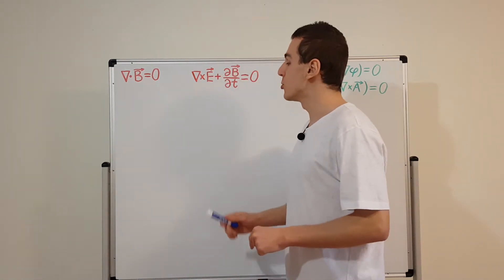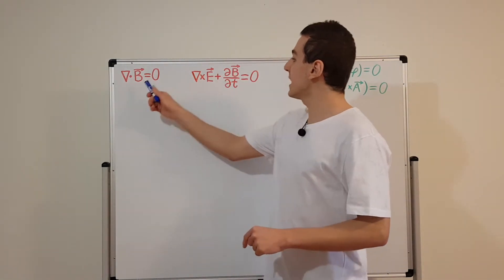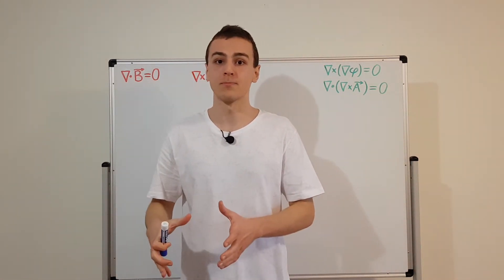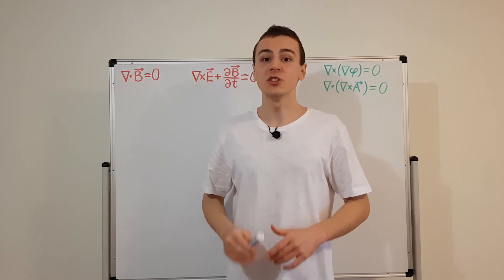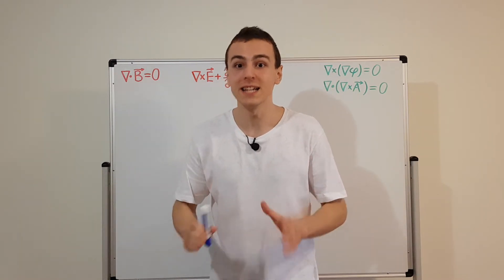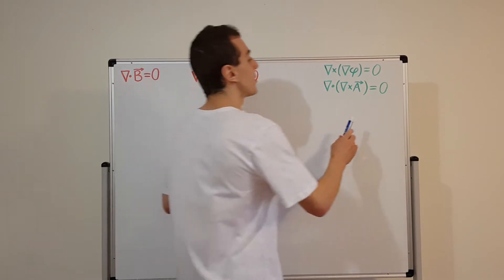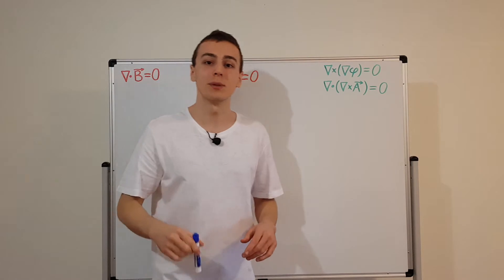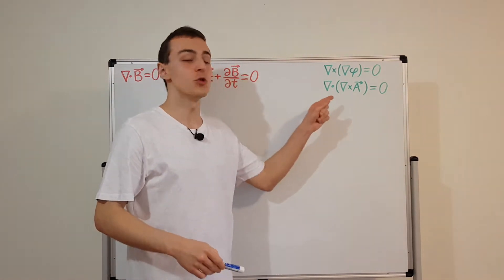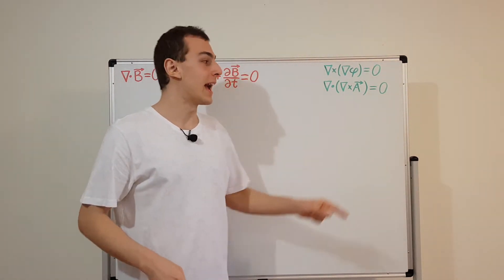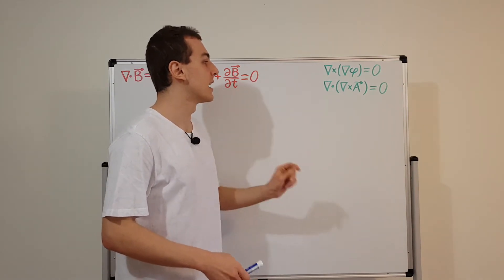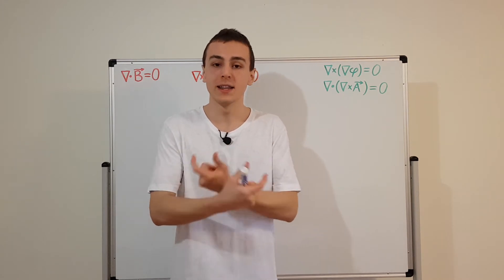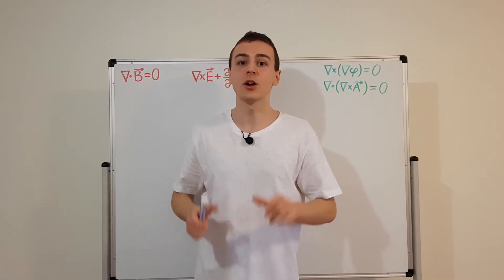In this video, all we need to do is take the electric and magnetic fields and write them in terms of the scalar and vector potentials. We're going to need some very useful vector identities for that. In the previous video I derived two vector identities, and both rely upon the fact that you can swap the order of partial derivatives — the order does not matter, they are commutative.